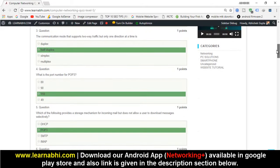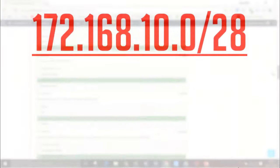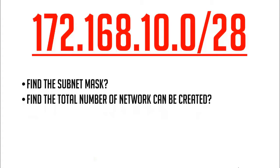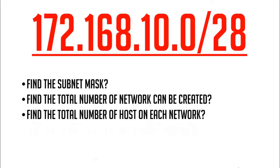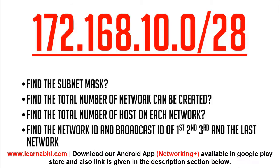Today's test question: from the IP address 172.168.10.0 with the CIDR value 28, find the subnet mask, find the total number of networks that can be created, find the total number of hosts on each network, and find the network ID and broadcast ID of the first, second, third, and last network.